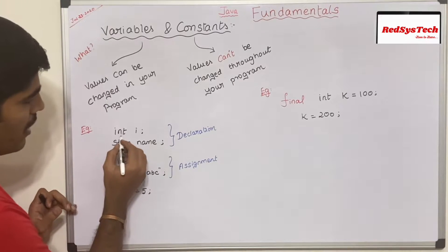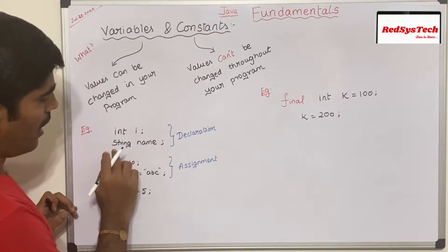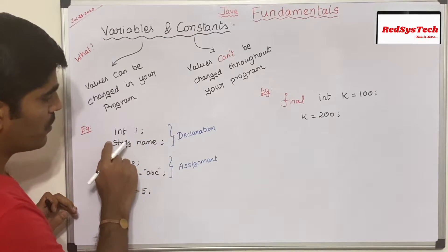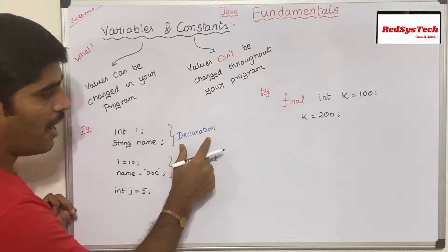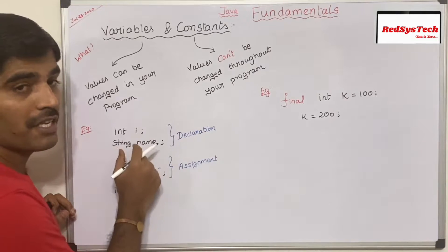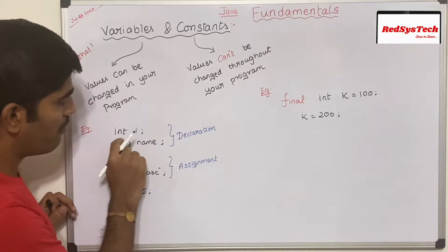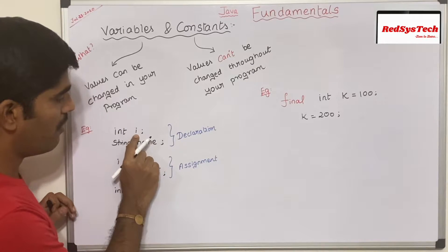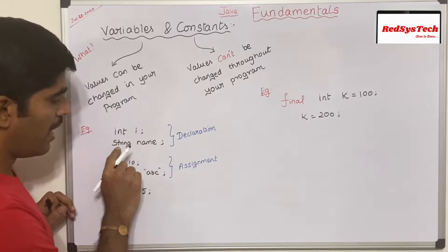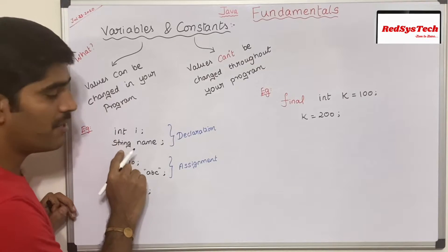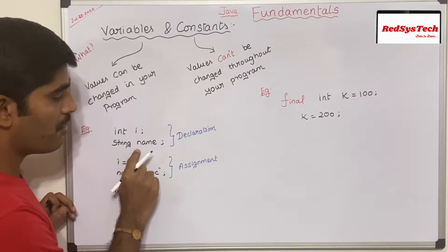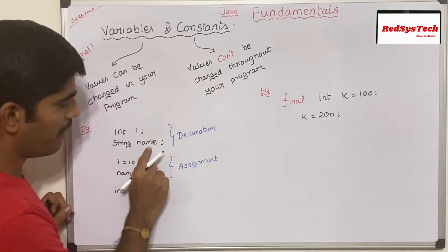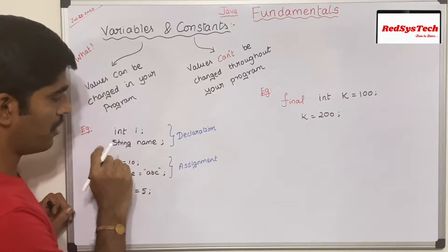For example, `int i` and `String name`. This is the way I'm going to declare a variable. Here I'm declaring a variable called `i` of type `int`, and similarly, I'm declaring a variable called `name` of type `String`.